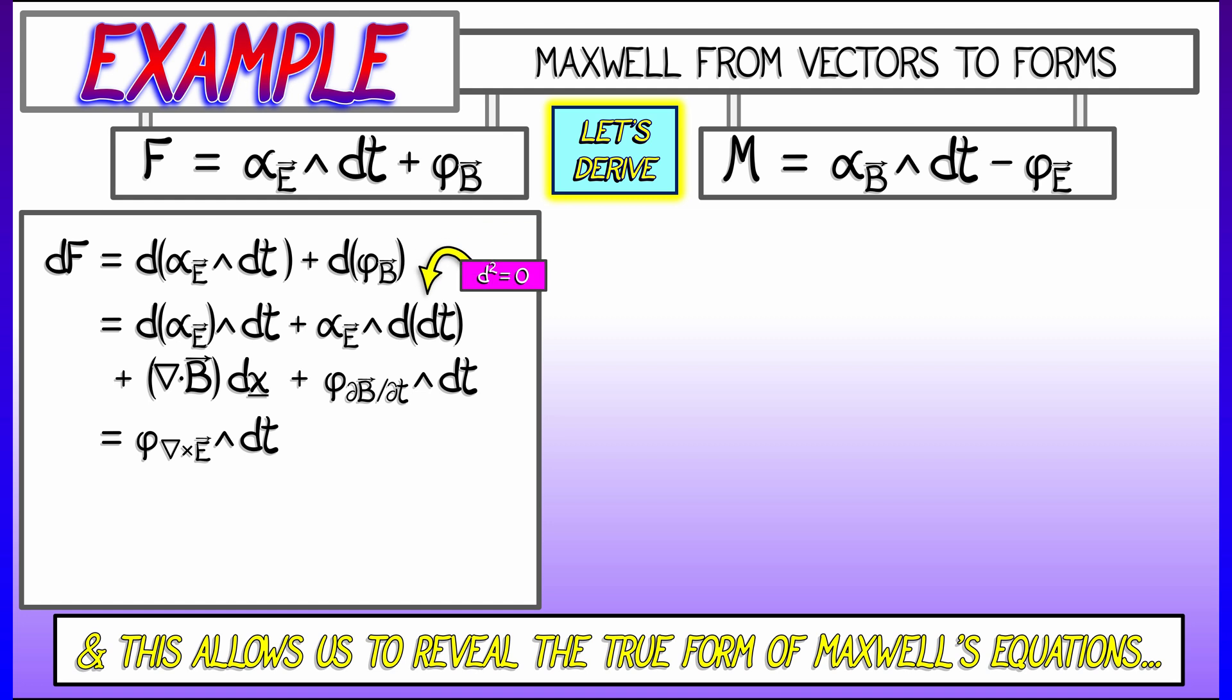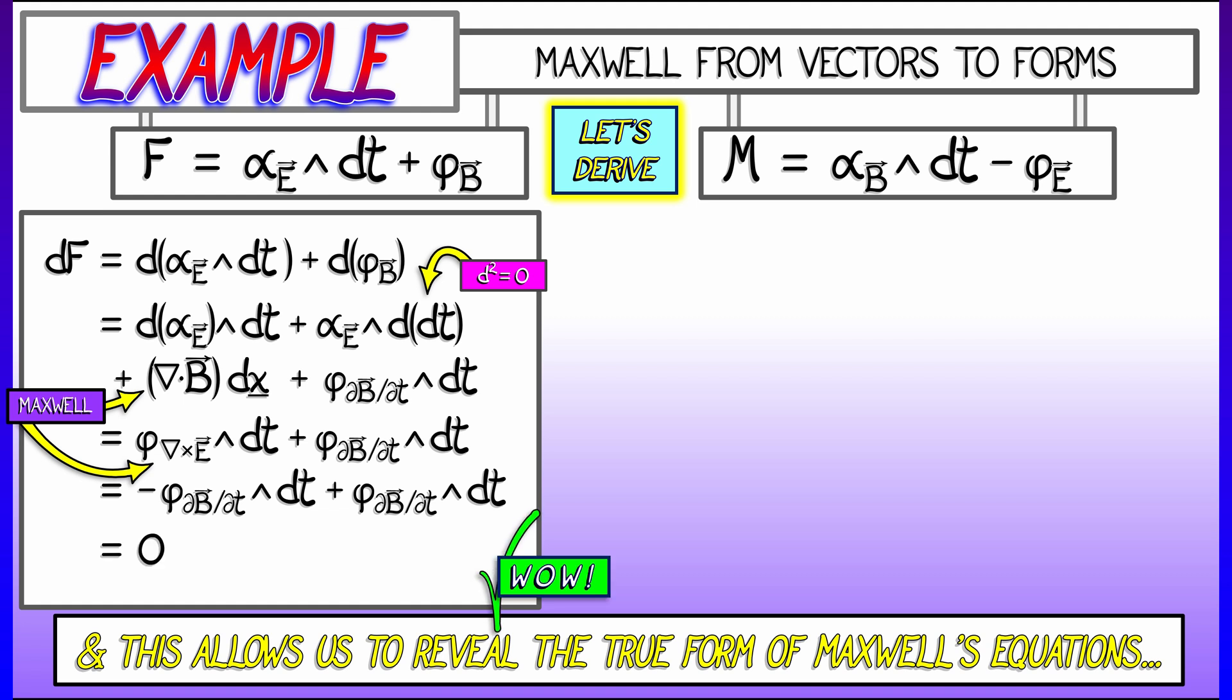Now, for the second term, oh, that's right. I see a d squared. I see d of dt, and that's automatically zero, so forget that. For the third term, I use Maxwell's equations to say, oh, look, the divergence of b is zero, and that just leaves me with that fourth term. Okay, now let's keep going. I see the curl of e sitting inside of that flux two-form. I'm going to use Maxwell's equations again to say that that is what? That is really minus the time derivative of b, and now I see that I have two instances of that flux two-form, one with a plus sign, one with a minus sign. The whole thing cancels, and I get zero. That's pretty cool. That means that the derivative of this Faraday two-form vanishes completely everywhere.